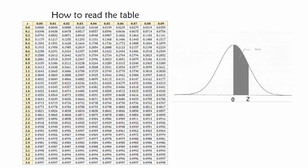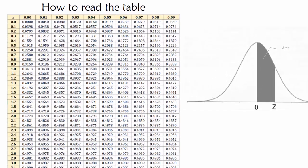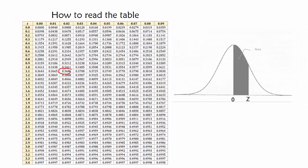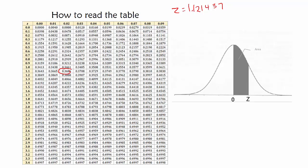Let's talk about how to read this table. The interior of the table is probabilities. For example, this number right here, 0.3686, is 36.86%. If I had solved a problem that gave me a z value of 1.121437, the z table gives us z's that go out to two decimals. The first column of the table is the first two decimals of the z, and the first row above is the third decimal of the z. So if we had a z of 1.121437, we would be able to find probability in this table for a z of 1.12.